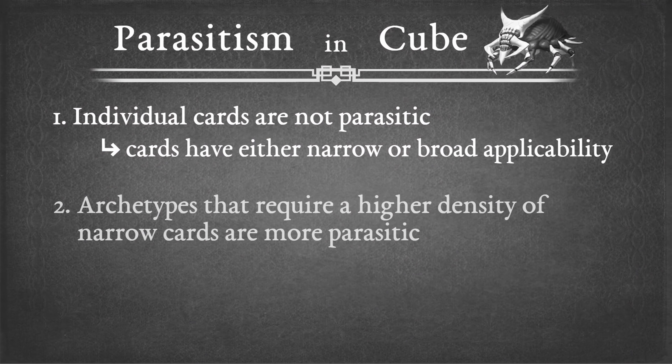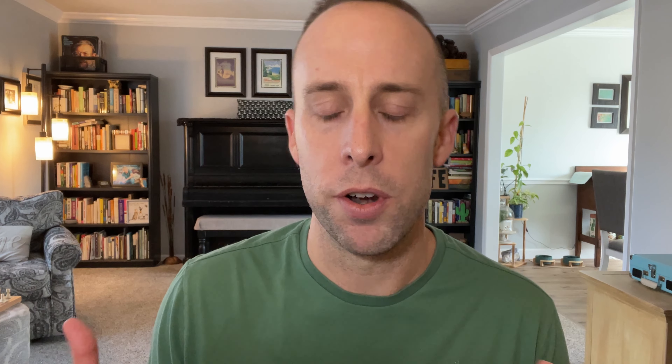This leads us to a second key idea: the higher the density of narrow cards an archetype requires to be viable, the more what we will term 'parasitic' that archetype should be considered. Other examples of archetypes that require a higher density of narrow cards to be viable would be archetypes such as energy, storm, or enchantress. Parasitic archetypes are not inherently bad — it just means those archetypes require a higher density of narrow cards to be viable, and narrow cards within cubes are also not bad on their own.